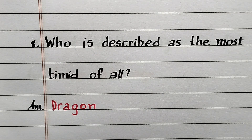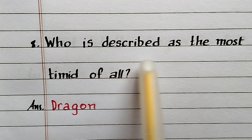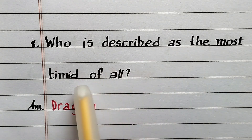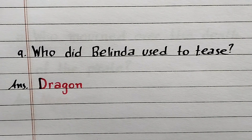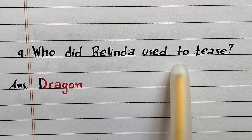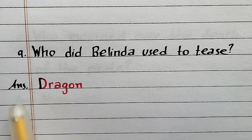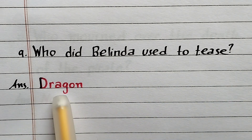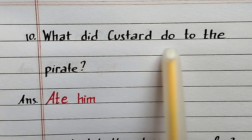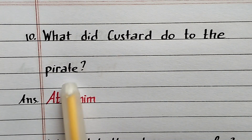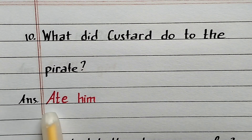Question number 8: Who is described as the most timid of all? Answer: The dragon. Question number 9: Who did Belinda used to tease? Answer: The dragon. Question number 10: What did Custard do to the pirate? Answer: Ate him.